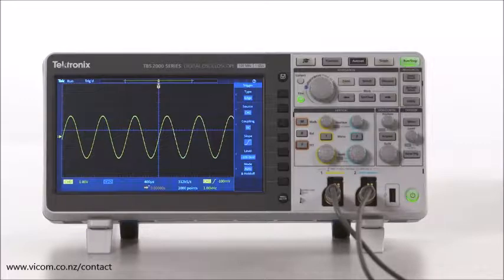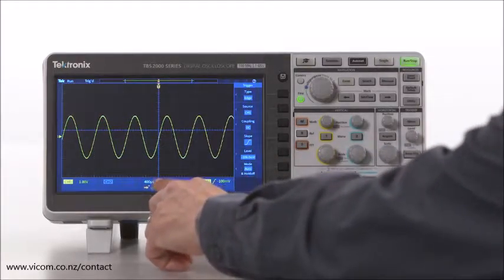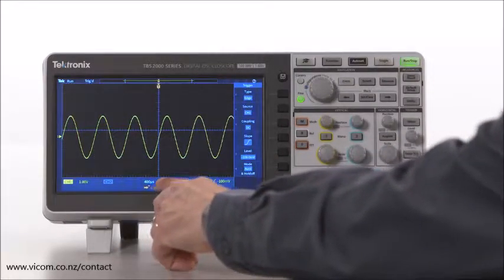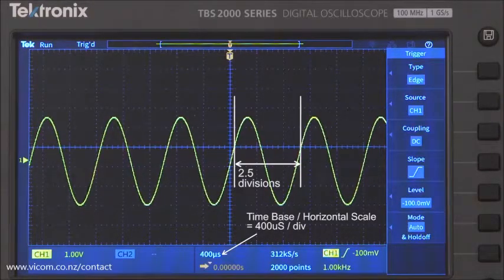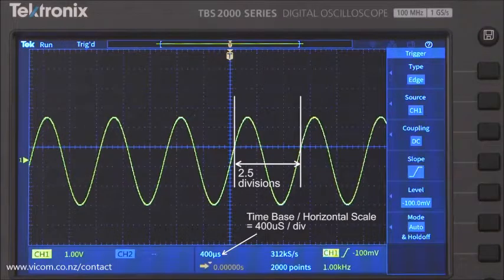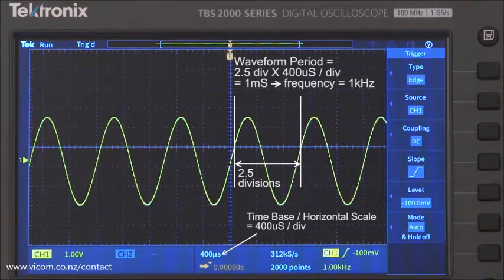In a similar way, you can measure time by counting the number of horizontal divisions and then multiplying by the horizontal scale setting. Let's do this to find the period of this signal. One cycle of the waveform takes up two and a half horizontal divisions. You can see that the horizontal scale is set to 400 microseconds per division. So, the period is 2.5 divisions multiplied by 400 microseconds per division. This equals one millisecond.